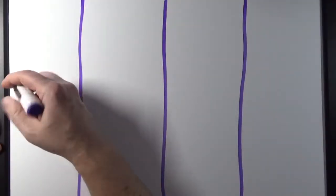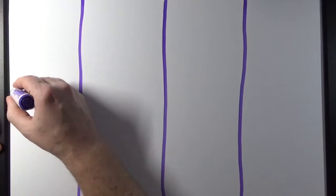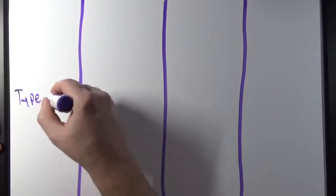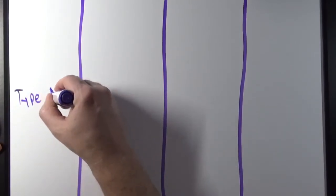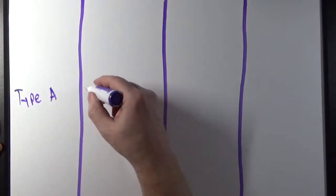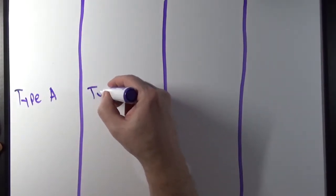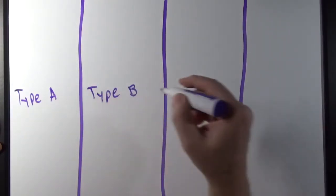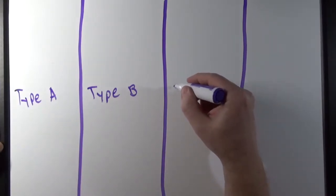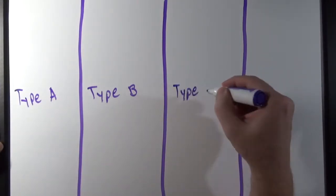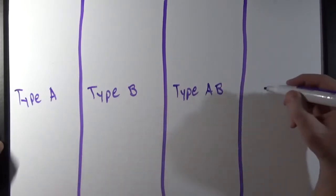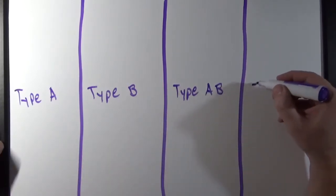This one will be type A blood. This person will have type B blood. This person will have type AB blood. And then this person will have type O blood.